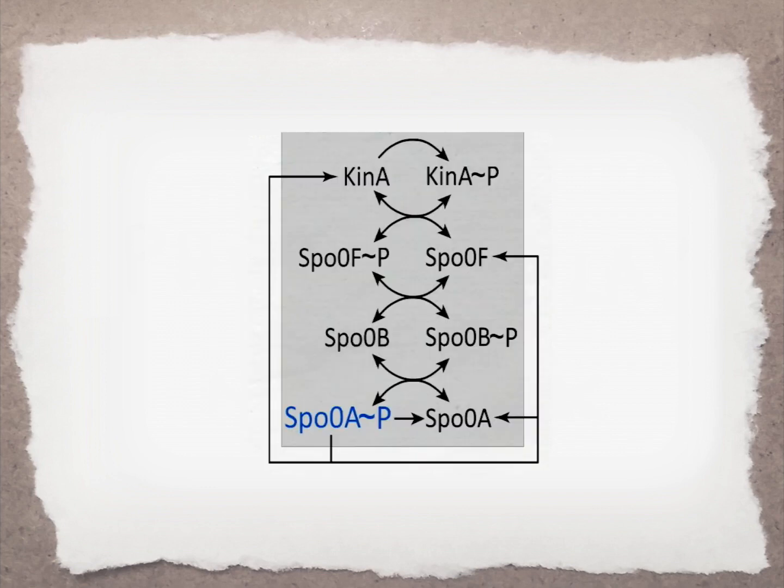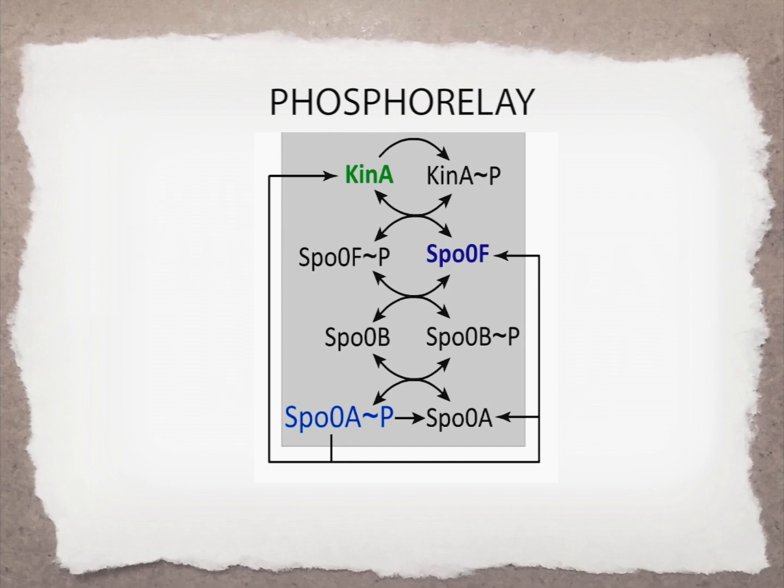Spo0A activity itself is controlled by a molecular network called phosphorelay. The phosphorelay activates Spo0A by transferring a phosphate group to it from a kinase via intermediate proteins Spo0F and Spo0B. We investigated the phosphorelay by constructing a detailed mathematical model. This model showed that two phosphorelay genes, kinase and Spo0F, play key roles in controlling Spo0A activity.